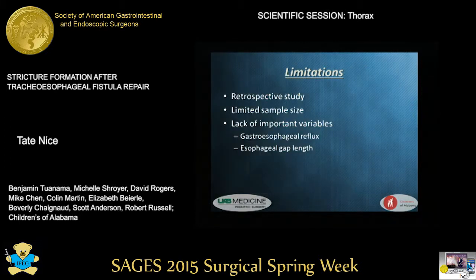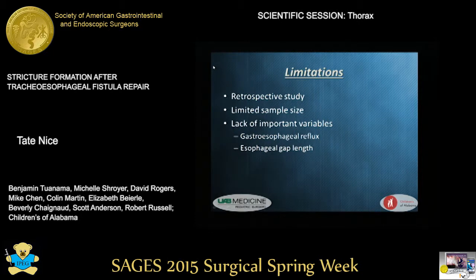This study suffers from some of the inherent weaknesses common to all retrospective studies, including the reliance on data found in medical records. Although there were 121 patients, which is fairly large given the rare condition, it does limit the number of variables that could be included in the multivariate analysis. Finally, some important variables to stricture formation, such as the presence of gastroesophageal reflux or the exact gap length, could not be reliably gathered and had to be estimated by other proxy variables.